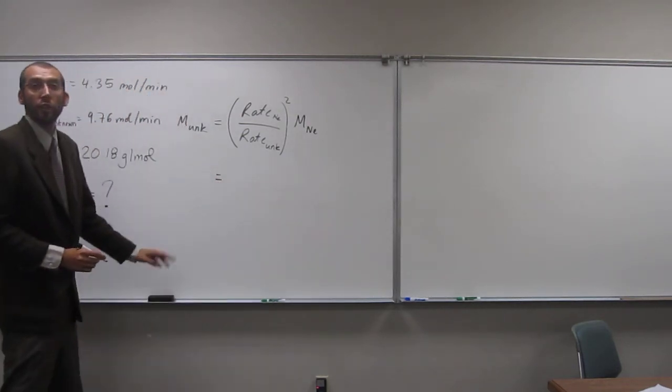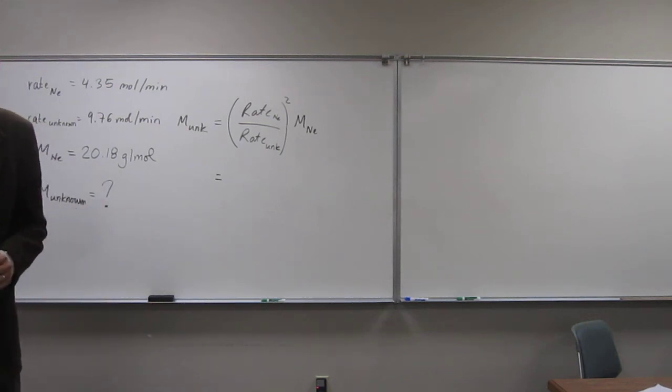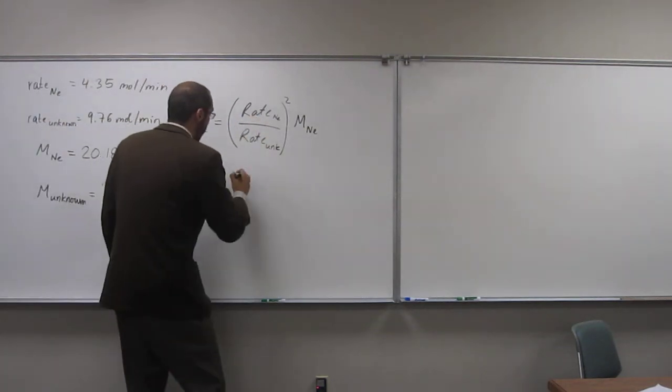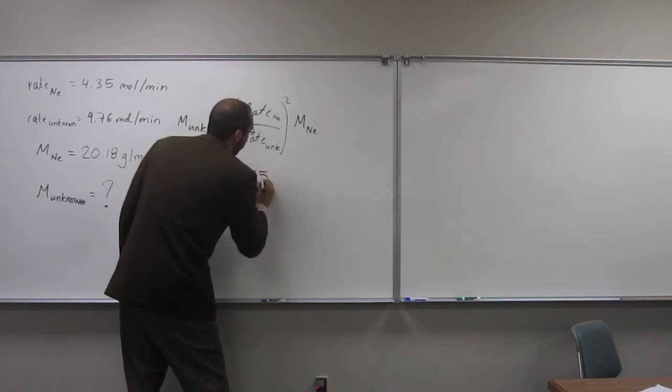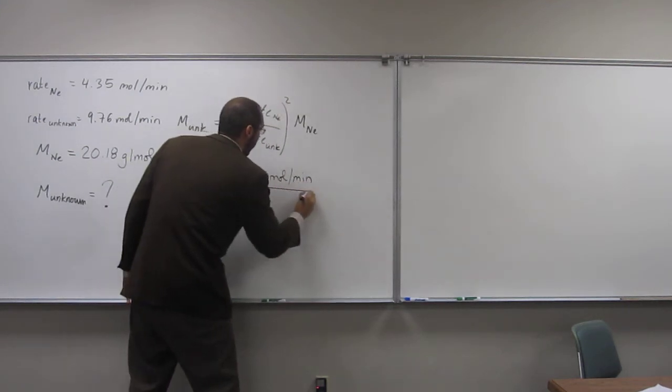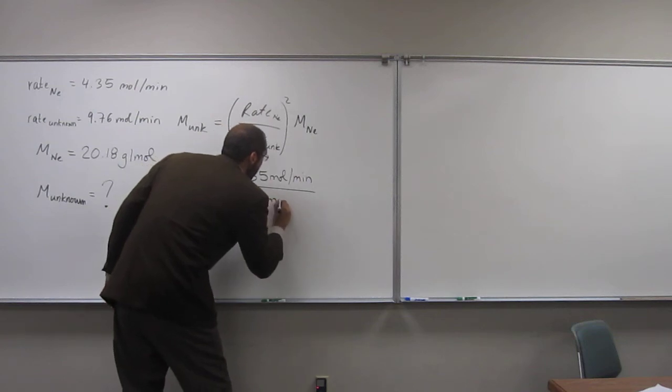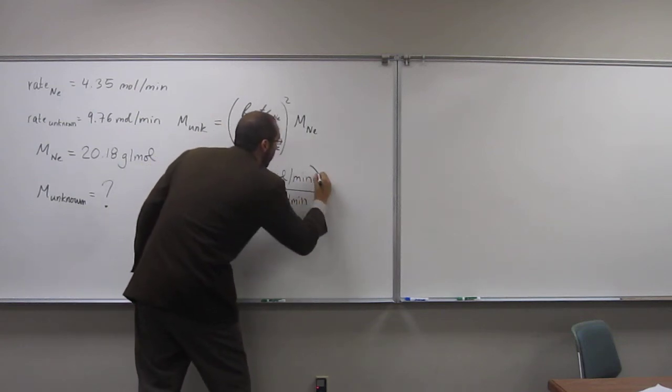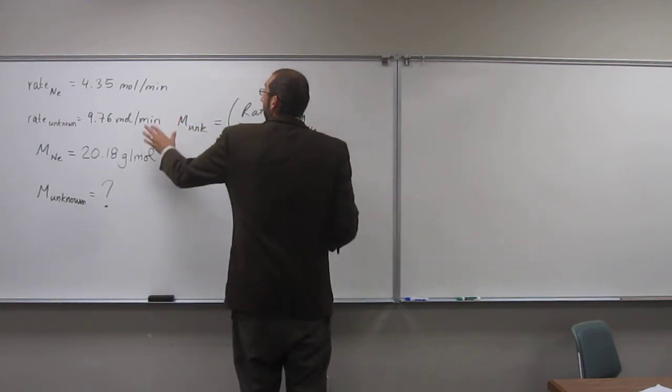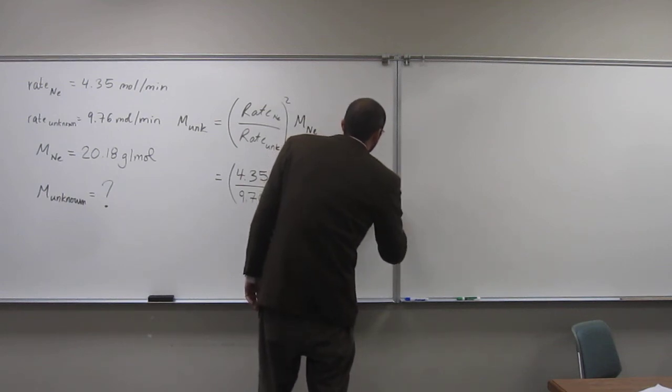So now it's just a plug and chug type problem. And then of course, at the end, we're going to kind of have a guessing game and see what gas that really is. Okay, so the rate of neon is going to be 4.35 moles per minute divided by 9.76 moles per minute.